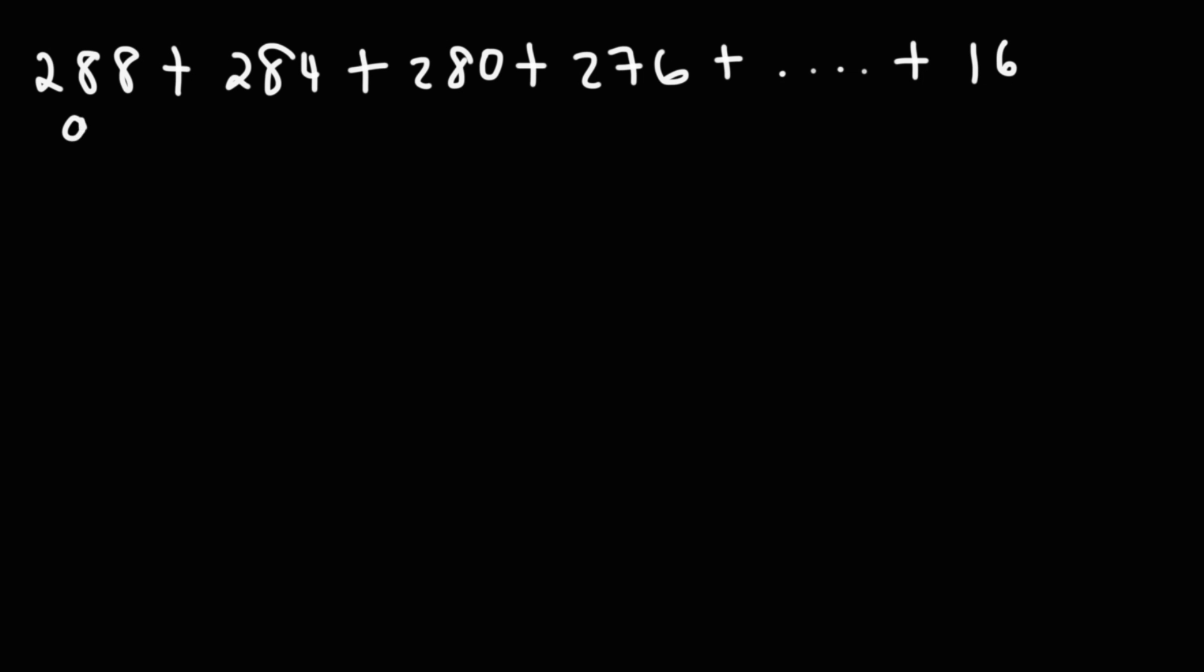Now we know the first term is 288. The last term is 16. Just like before, we need to calculate the value of n. And so we could use this formula to do that.